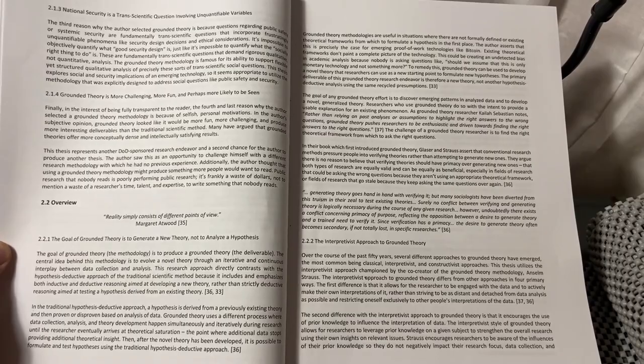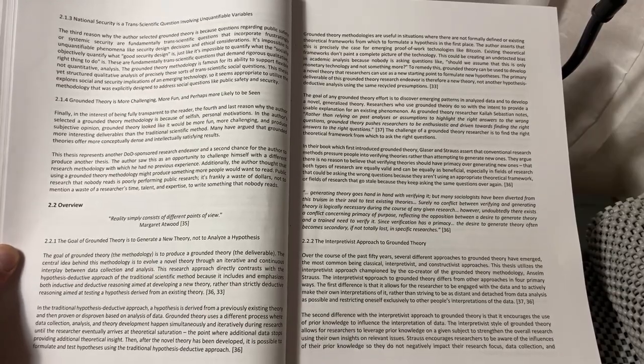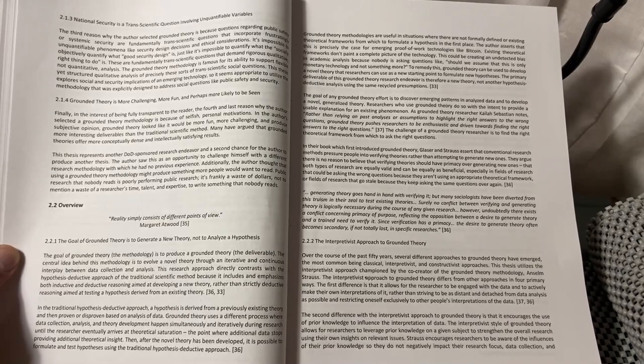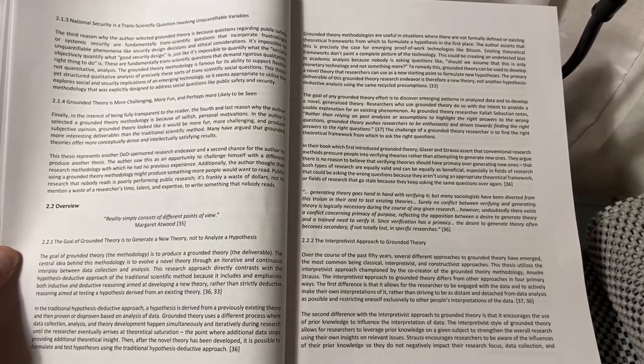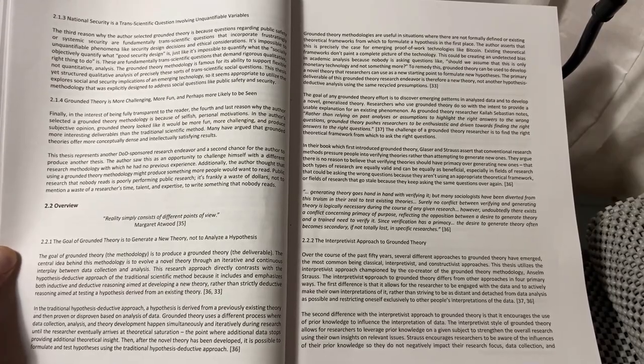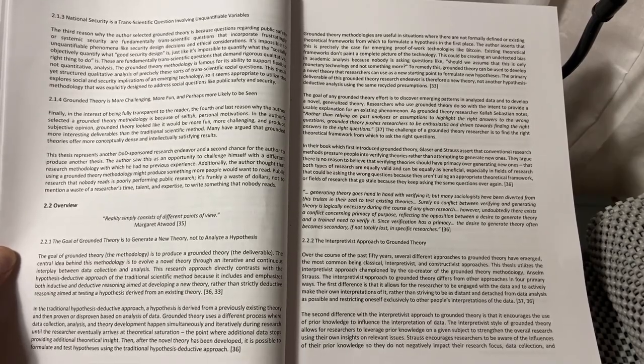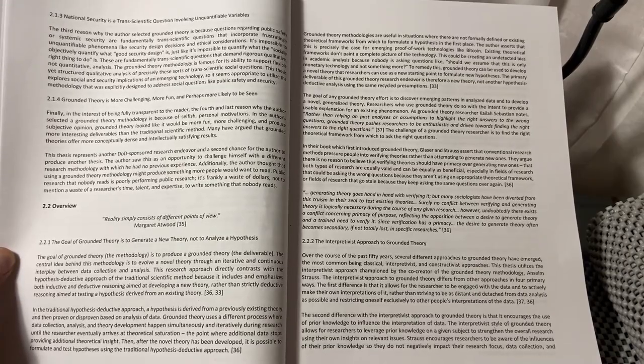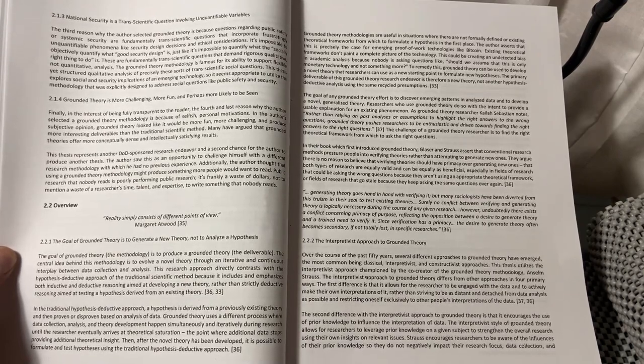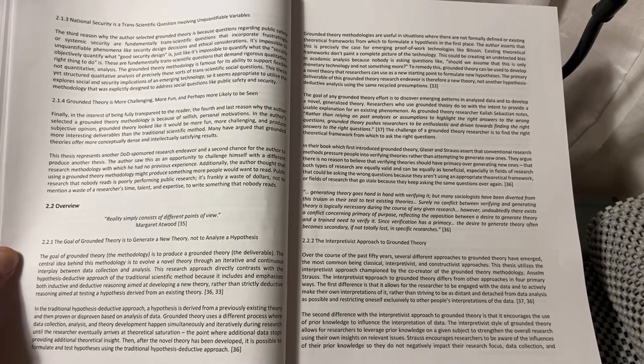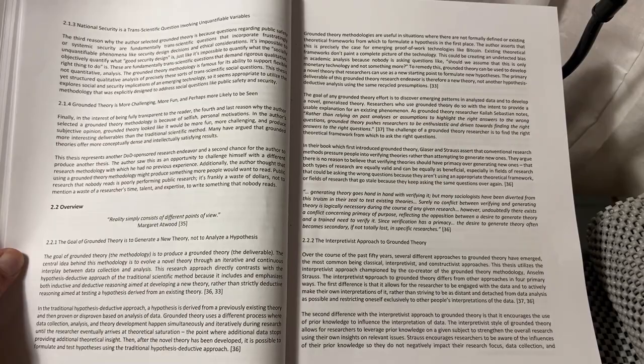Grounded theory methodologies are useful in situations where there are not formally defined or existing theoretical frameworks from which to formulate a hypothesis in the first place. The author asserts that this is precisely the case for emerging proof-of-work technologies like Bitcoin. Existing theoretical frameworks don't paint a complete picture of the technology. This could be creating an undetected bias in academic analysis because nobody is asking questions like, should we assume that this is only monetary technology and not something more? To remedy this, grounded theory can be used to develop a novel theory that researchers can use as a new starting point to formulate new hypotheses. The primary deliverable of this grounded theory research endeavor is therefore a new theory, not another hypothesis-deductive analysis using the same recycled presumptions.